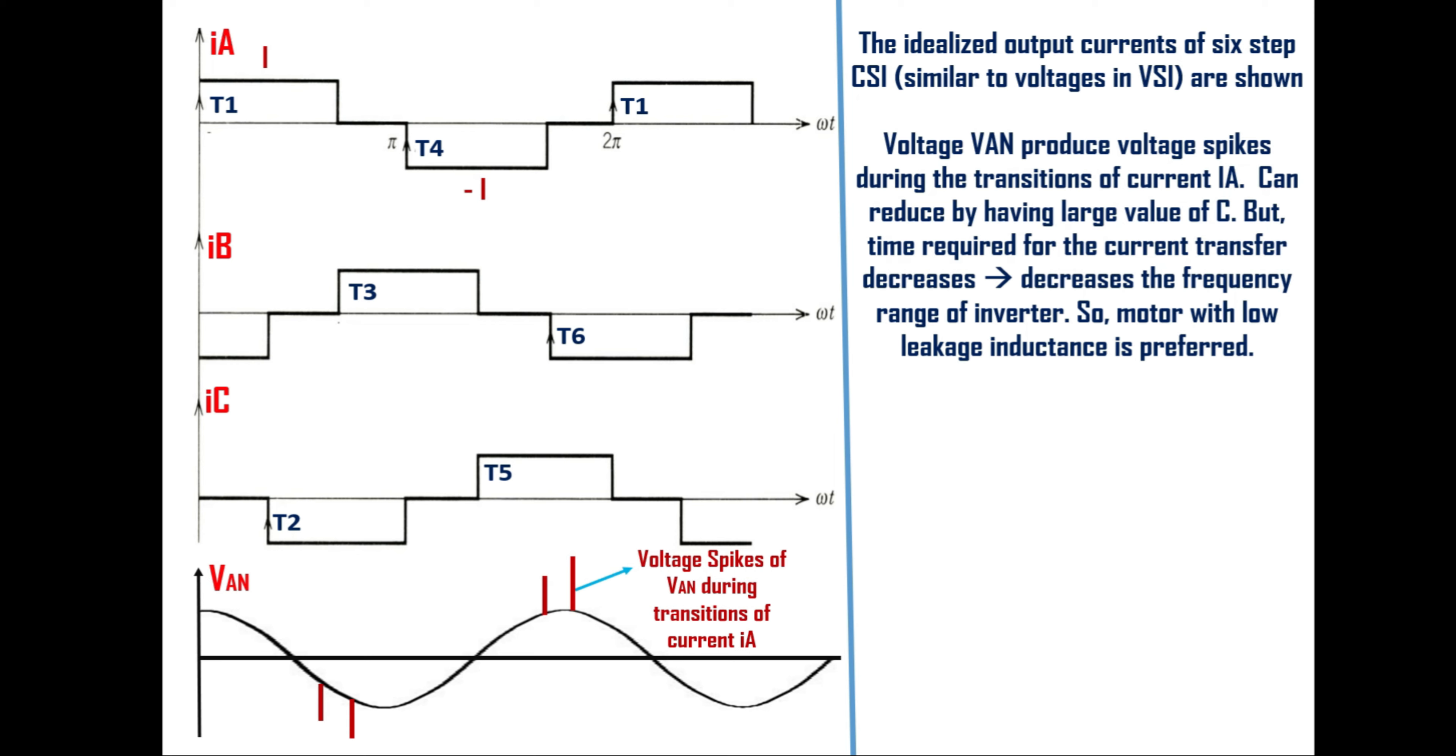Phase voltage Van will be sinusoidal and produce voltage spikes during the transition of current Ia. This voltage spikes can reduce by having large value of capacitors. But if you use large value of capacitors then time required for the current transfer will decreases which in turn will decreases the frequency range of the inverter and hence the speed range of the motor. So usually induction motor with low leakage inductance is preferred for current source inverter.